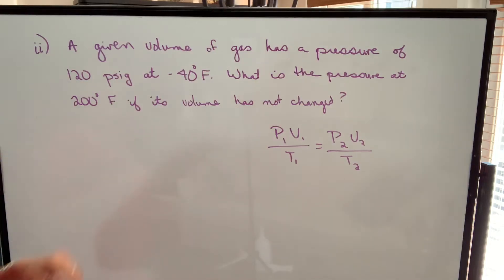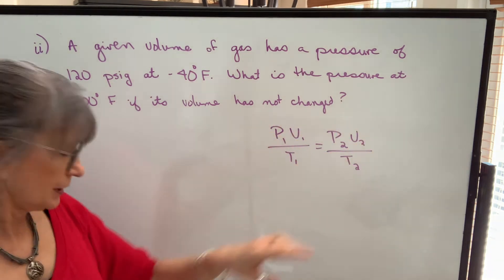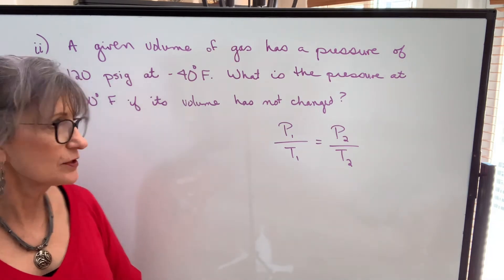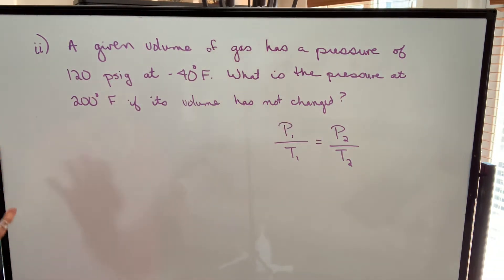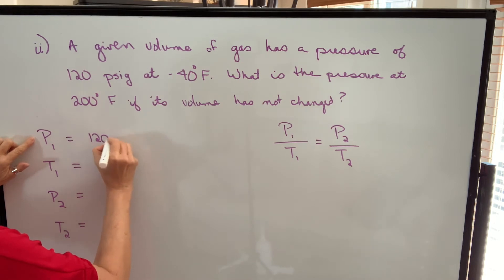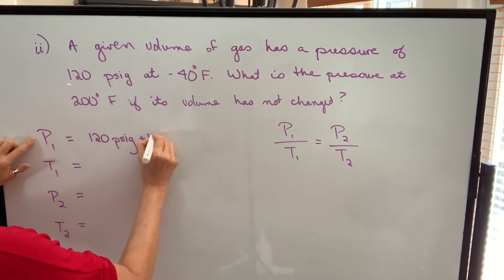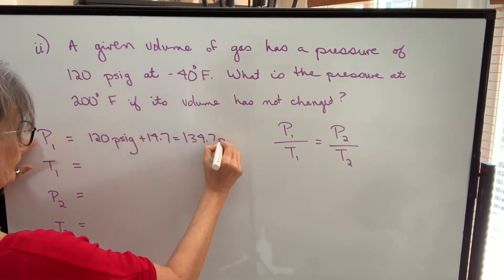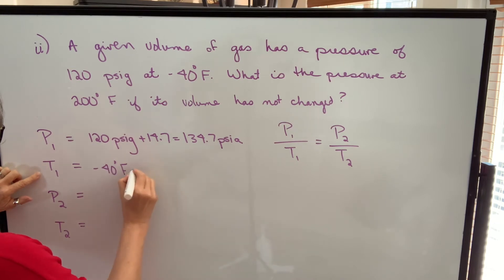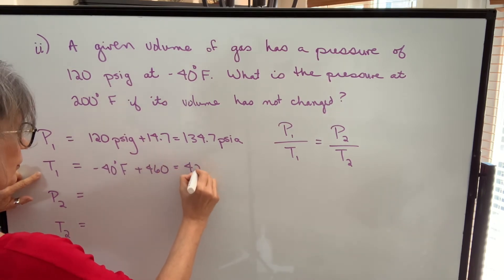Let's try another example. A given volume of gas has a pressure of 120 PSIG at minus 40 degrees Fahrenheit. What is the pressure at 200 degrees Fahrenheit if its volume has not changed? Since the volume hasn't changed, we can leave it out and we have Gay-Lussac's Law. Write all values at the side and change any to absolute units. Pressure one is 120 PSIG — add 14.7 to get absolute. Temperature one is minus 40 degrees Fahrenheit — add 460 to get 420 Rankine.